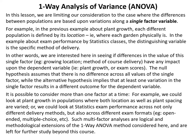In this lesson, we limit consideration to cases where differences between populations are based upon variations along a single factor variable. For example, in the plant growth example each population is defined by its location, and in the exam performance example the distinguishing variable is the method of delivery. The null hypothesis assumes no difference across all values of the single factor, while the alternative implies that at least one variation results in a different outcome for the dependent variable.